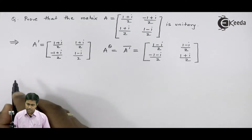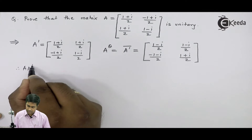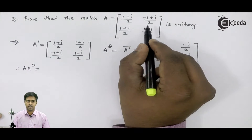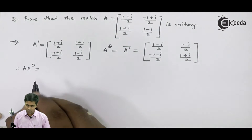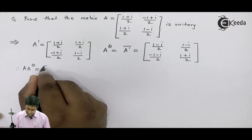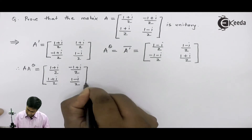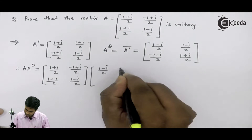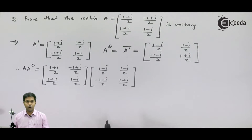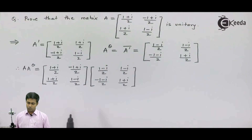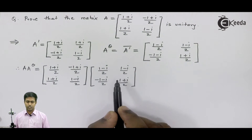Now let us find the product of A and A-theta. A is this matrix and A-theta is this matrix, so I will just copy them down and multiply these two matrices.